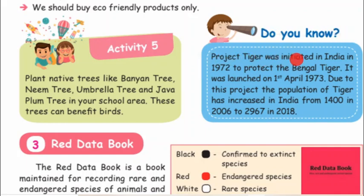Project Tiger was initiated in India in 1972 to protect the Bengal tiger. It was launched on 1st April 1973. Due to this project, the population of tigers in India increased from 1400 in 2006 to 2067 in 2018.